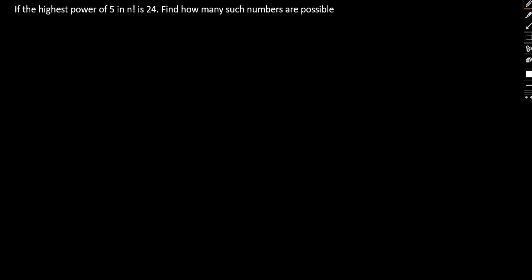With all that said and done, let us focus on the question at hand. If the highest power of 5 in n factorial is 24, find how many such numbers are possible.